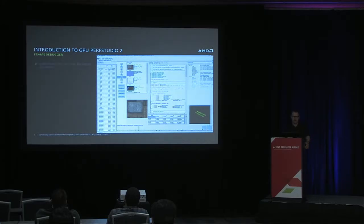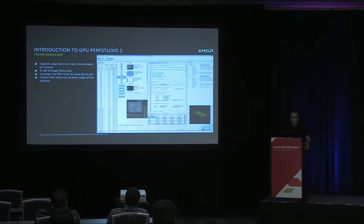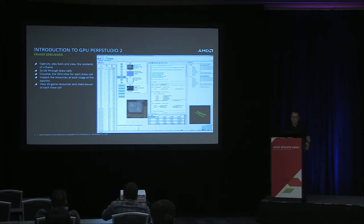Here's a screenshot of the frame debugger. The frame debugger is a tool that allows you to capture, play back, and view the contents of your frame. It's got a draw call slider area at the bottom with GPU times measured by height values, which lets you easily see the most expensive draw calls in your frame. You can inspect the resources at each stage of the graphics pipeline — your input assembler, vertex shader, pixel shader, and so on. You can view all of the game resources that are bound to your shader.